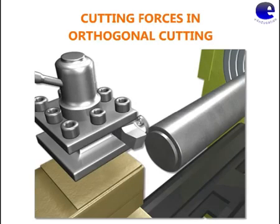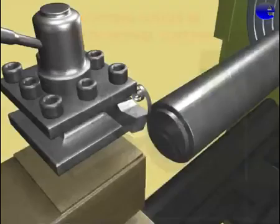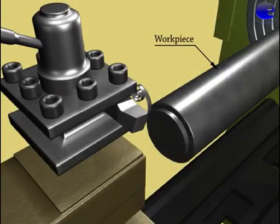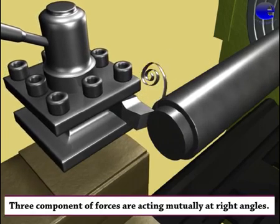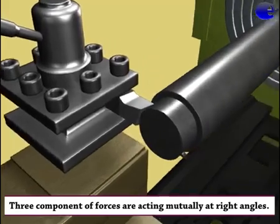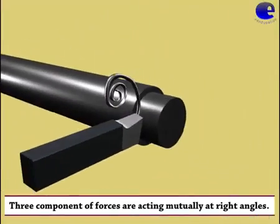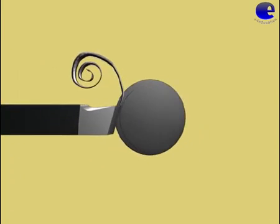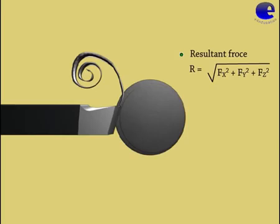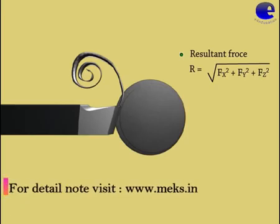In this video, we are going to see about cutting forces in orthogonal cutting. Consider a workpiece held in the lathe. Three components of force are acting mutually at right angles. The resultant force R is equal to the square root of Fx squared plus Fy squared plus Fz squared.